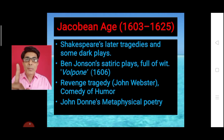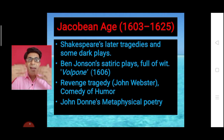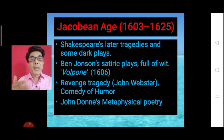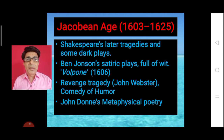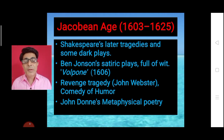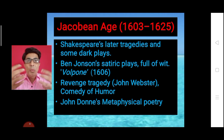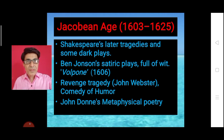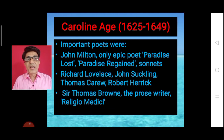Don't forget John Donne's contribution in the field of English poetry. John Donne reacted against the Romantic poetry of the Elizabethan age — against the romantic sonnets of Shakespeare, Edmund Spenser, and Sir Philip Sidney. He innovated a new kind of poetry in English literature during this Jacobean Age, and John Donne became the pioneer of metaphysical poetry in English literature.